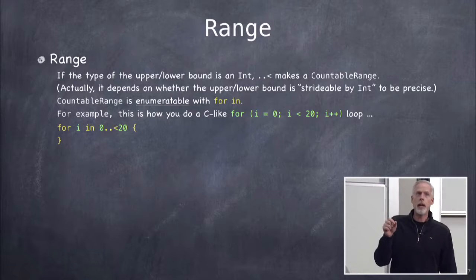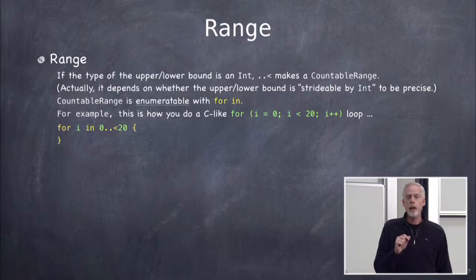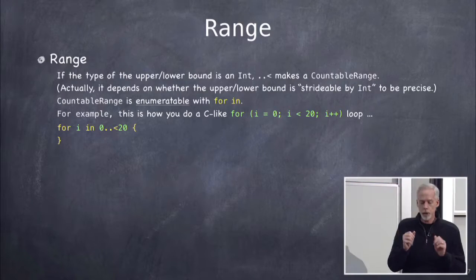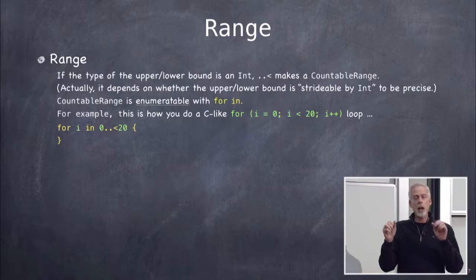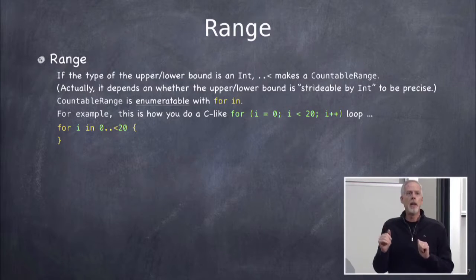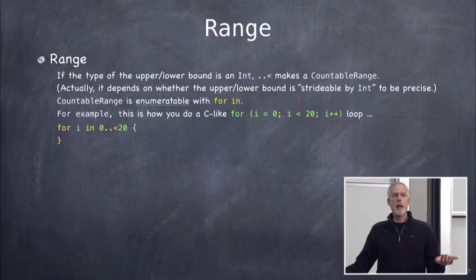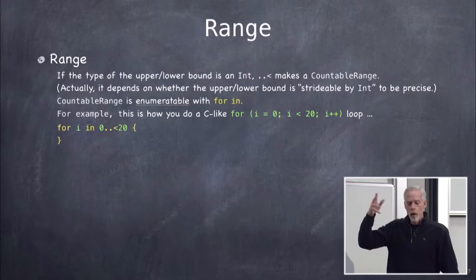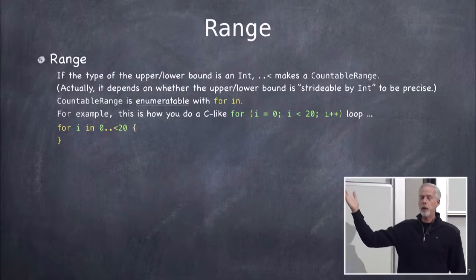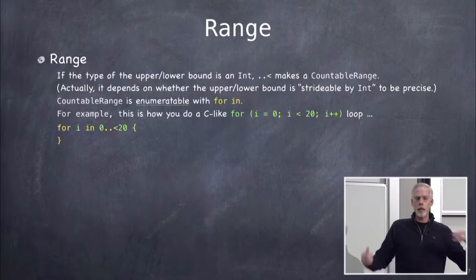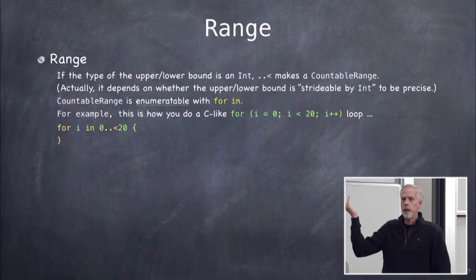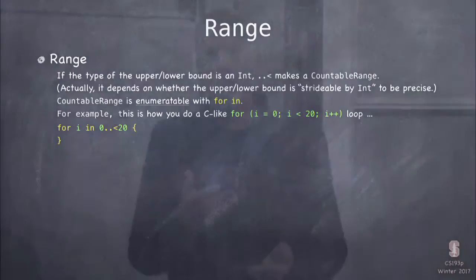Countable range is a sequence, arrays are sequences of their elements, and dictionaries are also sequences. Here's how you do a normal C-like for loop in Swift: instead of 'for i=0; i<20; i++' — which doesn't exist in Swift — you say 'for i in 0..<20'. That block of code executes once for each of 0 through 19.